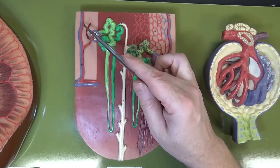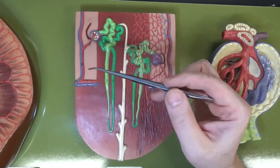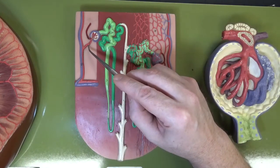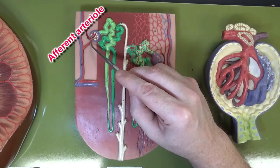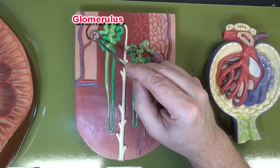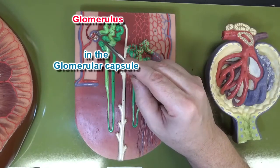These interlobular arteries, remember, are also known as cortical radiate arteries. Now branching off the interlobular artery is an afferent arteriole bringing blood into the glomerulus, which is a ball of capillaries inside the glomerular capsule.